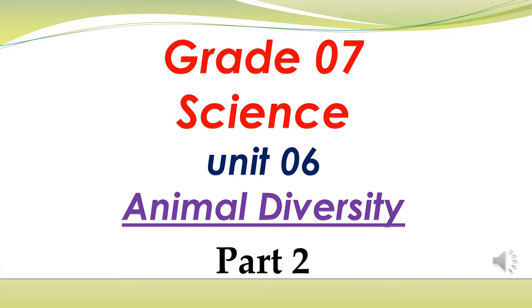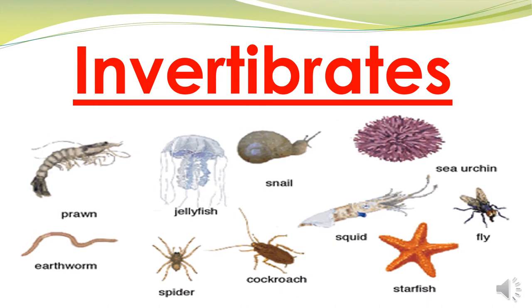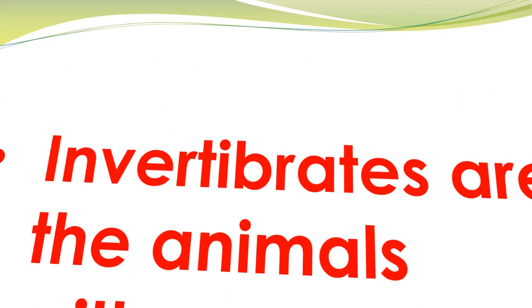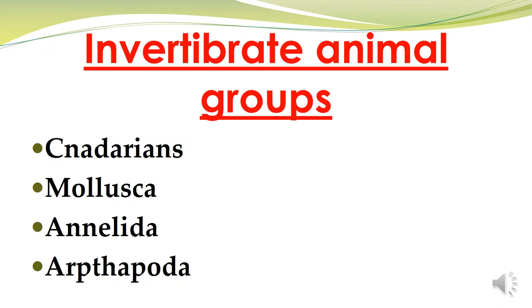Hello everyone, today we are going to talk about the lesson animal diversity. Our main topic is invertebrates. Invertebrates are the animals without a vertebral column. The invertebrate animal groups are cnidarians, mollusca, annelida, and arthropoda.